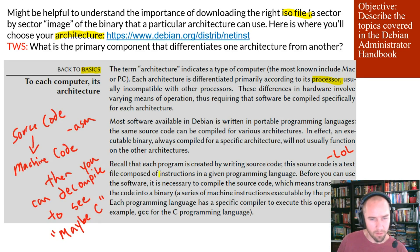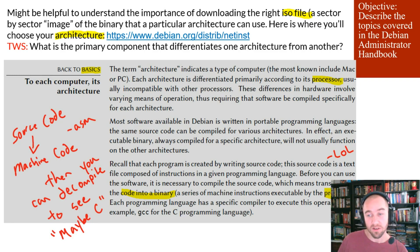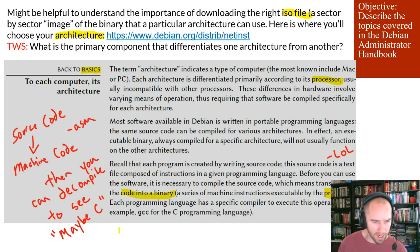Later, they mention that a program is created by writing source code — a text file composed of instructions in a given programming language. Before you can use the software, it is necessary to compile the source code, which means transforming the code into a binary, which is a series of machine instructions executed by that particular processor. So the compiler needs to connect to the processor it's compiling for, or else your program — or in this case, the operating system — will not be able to work correctly. And if you want to learn more about compilers, I have a few videos out there giving an ELI5 of how compilers work.